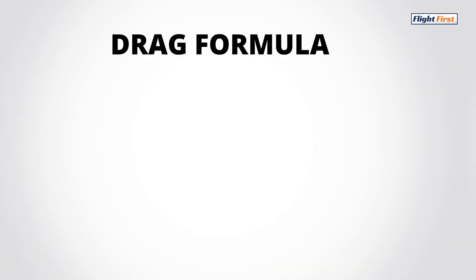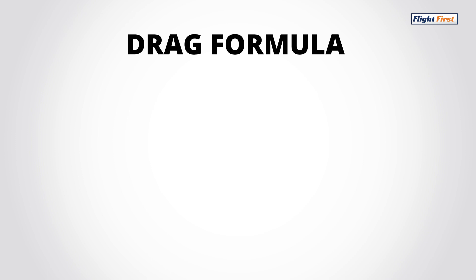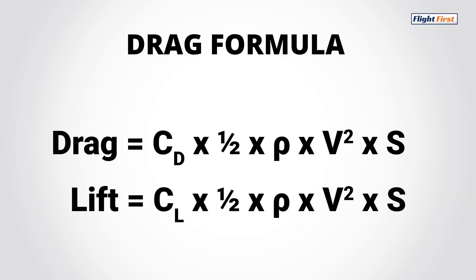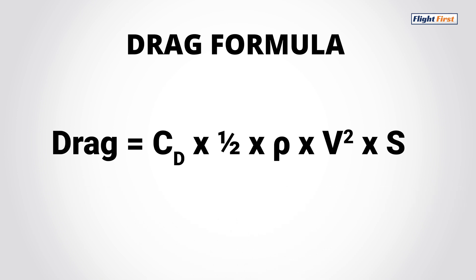Since you're already familiar with the formula for lift, the formula for drag is: drag equals the coefficient of drag times half times rho times velocity squared times surface area. It looks just like the formula for lift, with the only difference being the coefficient of drag. This means if any of the above variables are changed, drag will change accordingly.